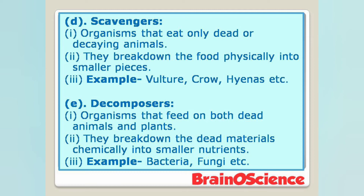E. Decomposers. Point 1: Decomposers are organisms that feed on both dead animals and plants. Point 2: They break down the dead material chemically into smaller nutrients. Examples: bacteria, fungi, etc.